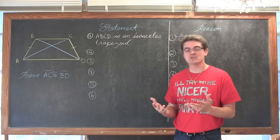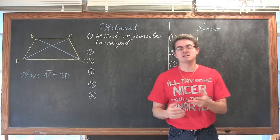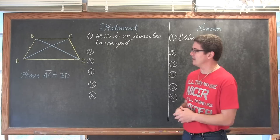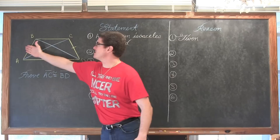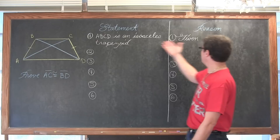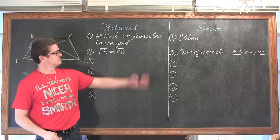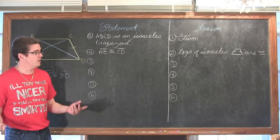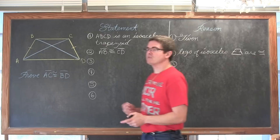We need to build up the information to prove those triangles congruent using side-side-side, side-angle-side, angle-side-angle, or angle-angle-side. The first thing we can see is that BA is congruent to CD because they are the legs of an isosceles trapezoid and thus congruent by definition.